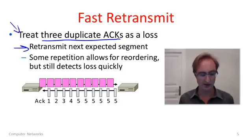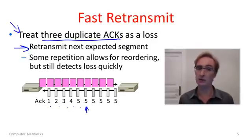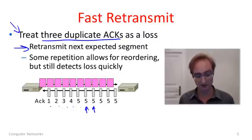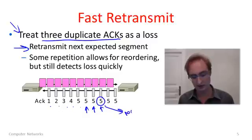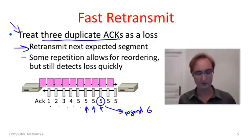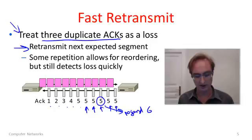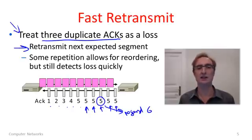We can see the heuristic working in the ACK stream. ACKs come in: 1, 2, 3, 4, 5. Then we get duplicates — a packet arrived on the other side but it wasn't segment 6, so the ACK stays at 5. After the third duplicate ACK, we retransmit segment 6, assuming it was lost. Note that after sending 6, we continue receiving duplicate ACKs because it takes time for segment 6 to reach the other side, for the cumulative ACK to advance, and for us to hear back a larger cumulative ACK.